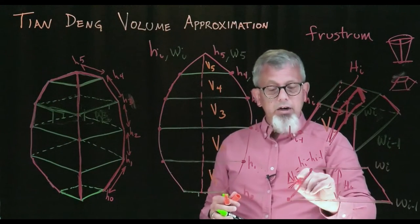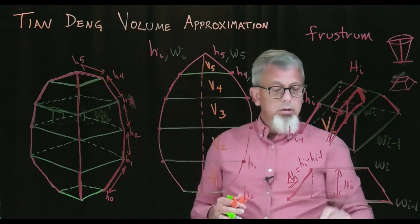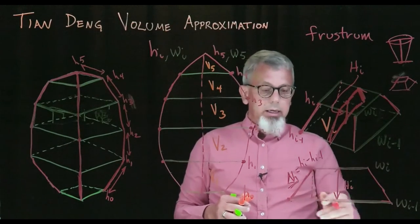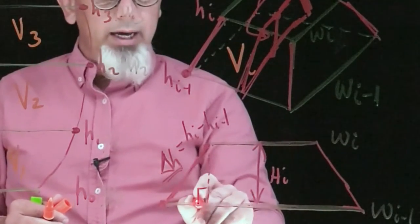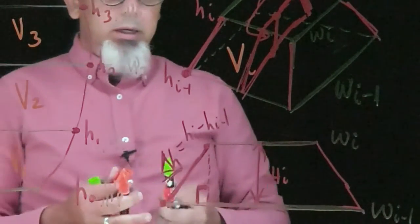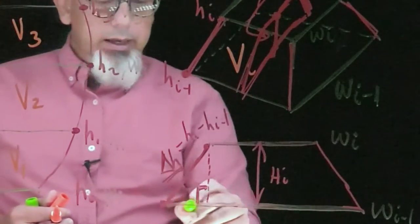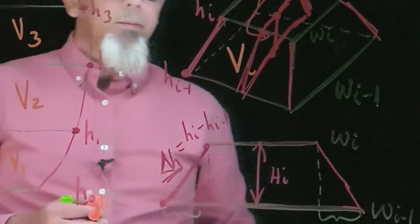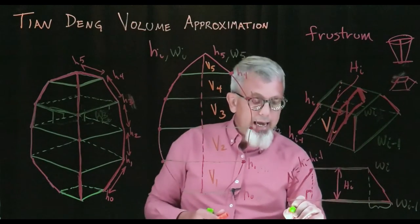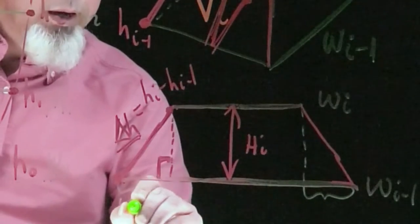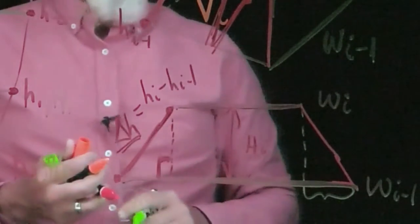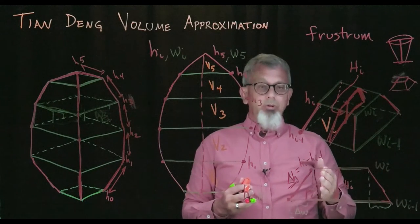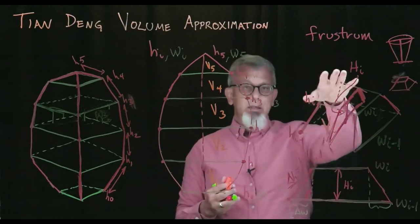If I have this height here, delta h, and I'm trying to find this vertical height, how can I do that? Well, if I look, I now have a right triangle. There's my right triangle. And I notice that this little piece here, if we assume some symmetry, is half, one half, of the difference between my widths. So, now I have enough geometry to make an estimate for the height of my frustum.